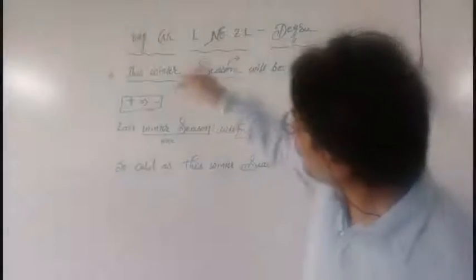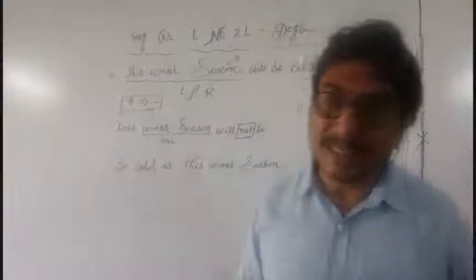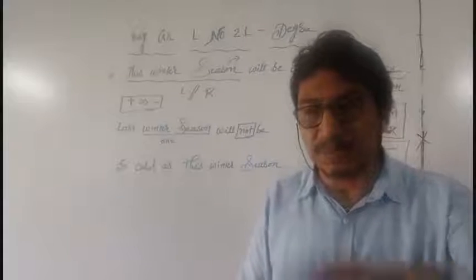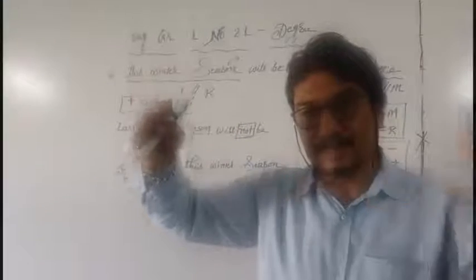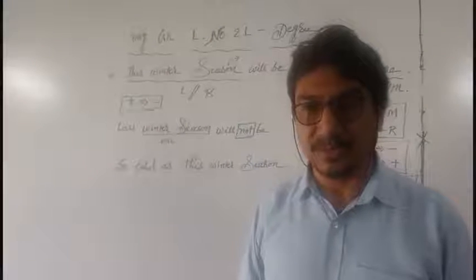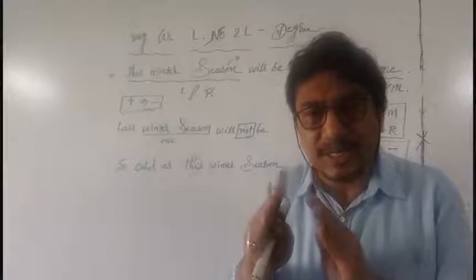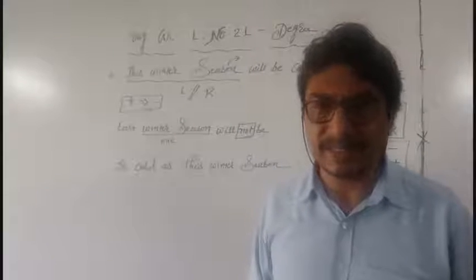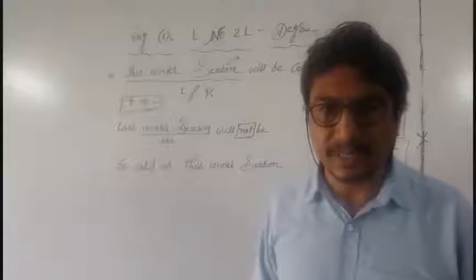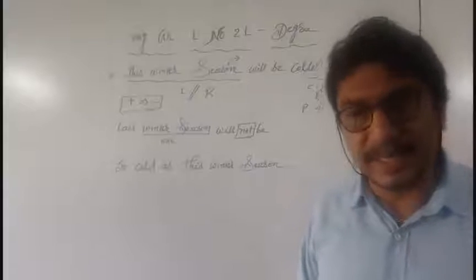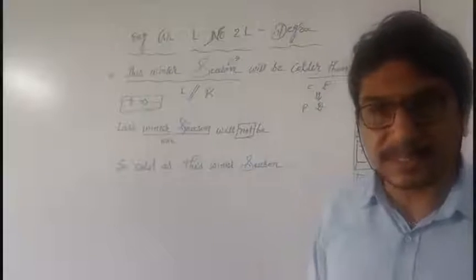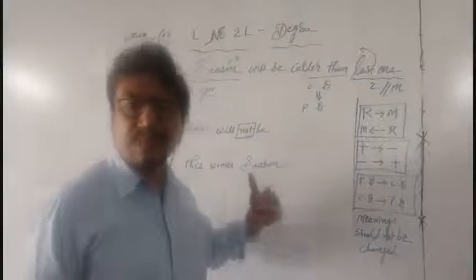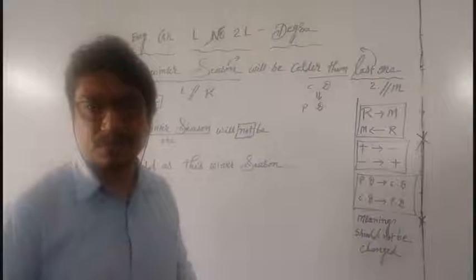Hence it is proved: this winter season will be colder than the last one, and the last winter season will not be so cold as this one. In this way, gradually you will attempt any kind of degree sentences, as far as PD, CD, and SD are concerned. Now we will go ahead for the next pattern. Write down the answer for this one, and note the shortcut key for this type of sentence — transformation of degree.